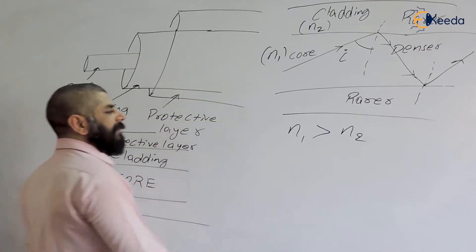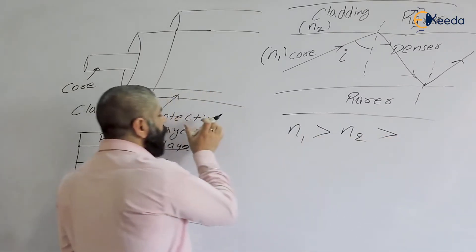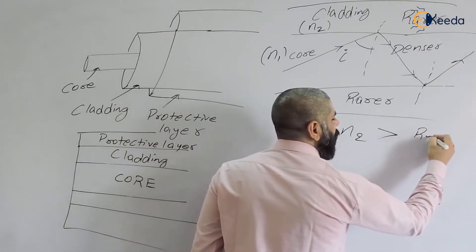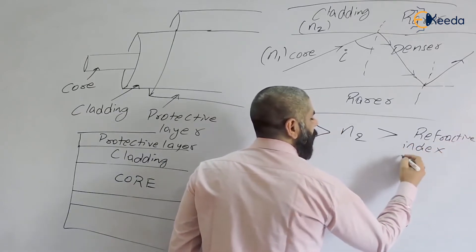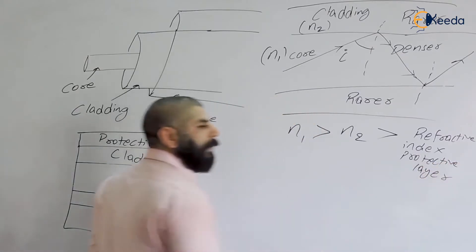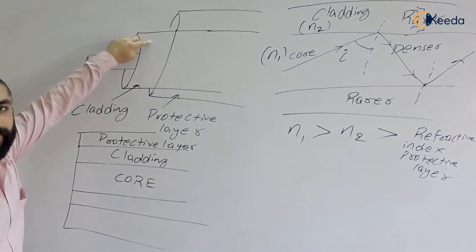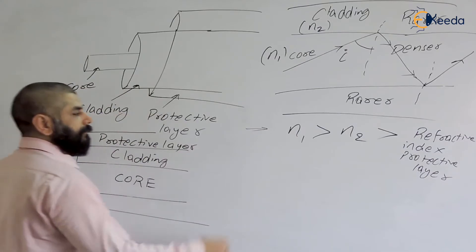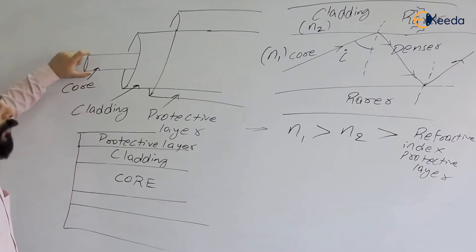The refractive index of the protective layer is minimum, so we do not generally consider it. Light is traveling only through the core, and the refractive index of the core is greater than that of the cladding — that is one important point to remember.